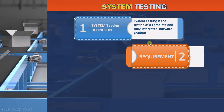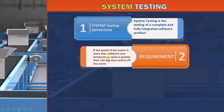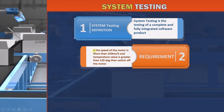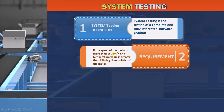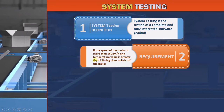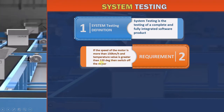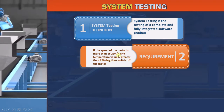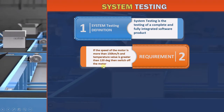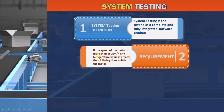Let's use an example to illustrate this concept. Suppose we have this requirement from our customer: if the speed of the motor is more than 150 kmph and the temperature value is greater than 120 degrees, then switch off the motor. We are already familiar with this requirement from previous examples. But now, let's see how system testing is carried out on it.